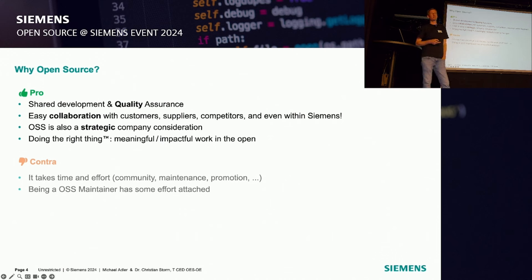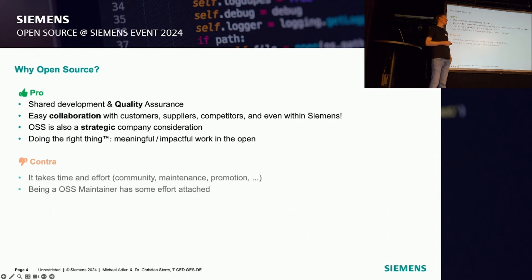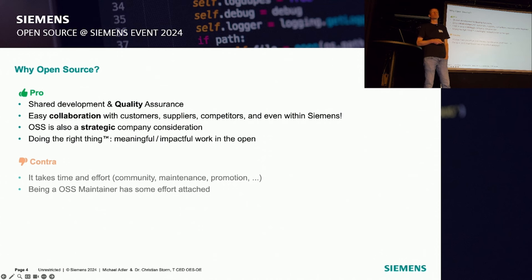We thought this was a strategic decision to make such a project open source, because there was a void in this space. You have essentially Mender.io, you have Hogbit which was already lagging behind. There was a place for a new product, a new open source software that you could place in this void — and this may become WFX. Last but not least, it's doing the right thing. We thought we had something others may find useful, we can leverage synergies and work with communities. It's meaningful and maybe impactful. Of course there are some cons — a bit more effort if you do it in the open than behind closed doors. But this was very well worth the effort, so we decided: let's go open source.